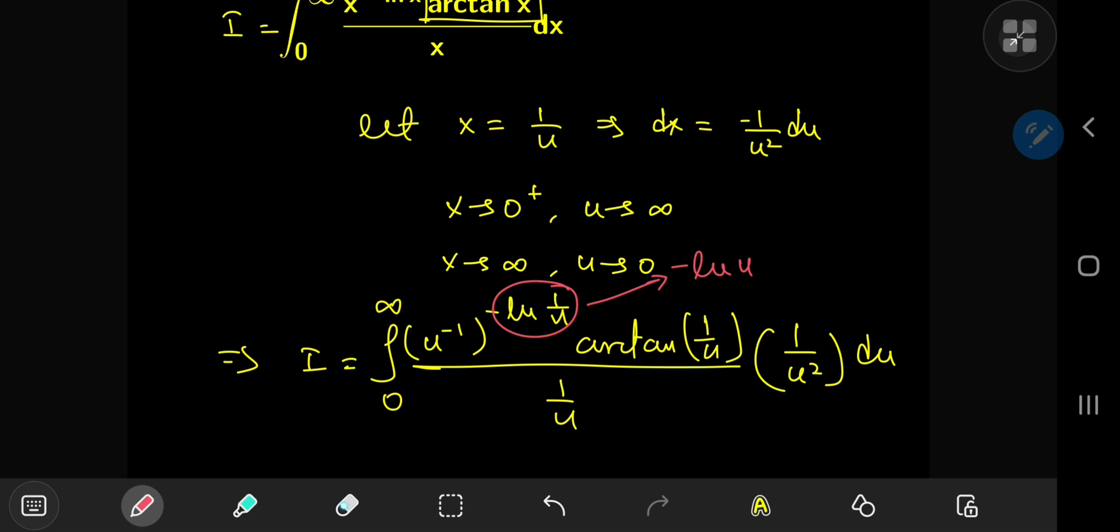So the two negative signs will cancel out, and you'll have log u as the exponent, and you have u to the negative 1 to the log u. So you can write all of this in a more compact sense as u to the negative log u.